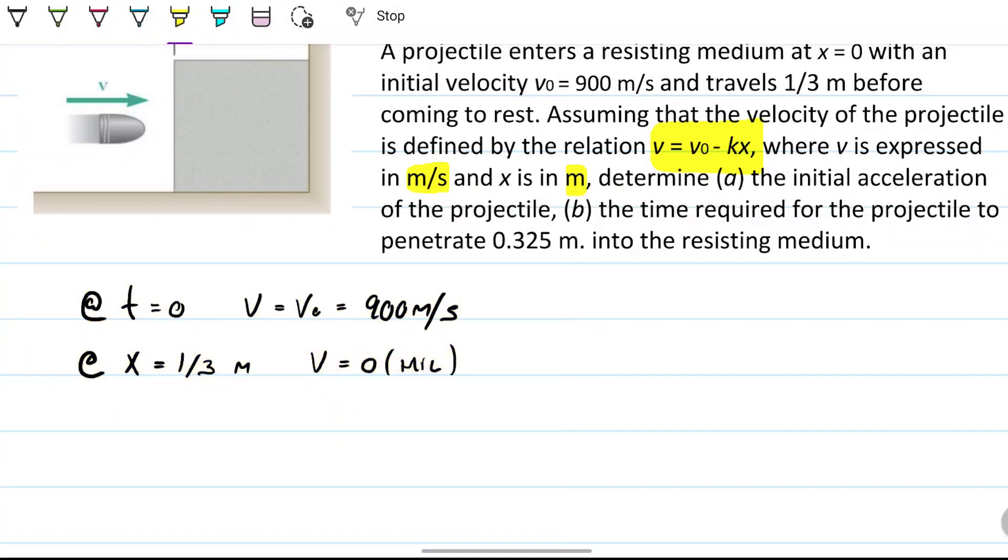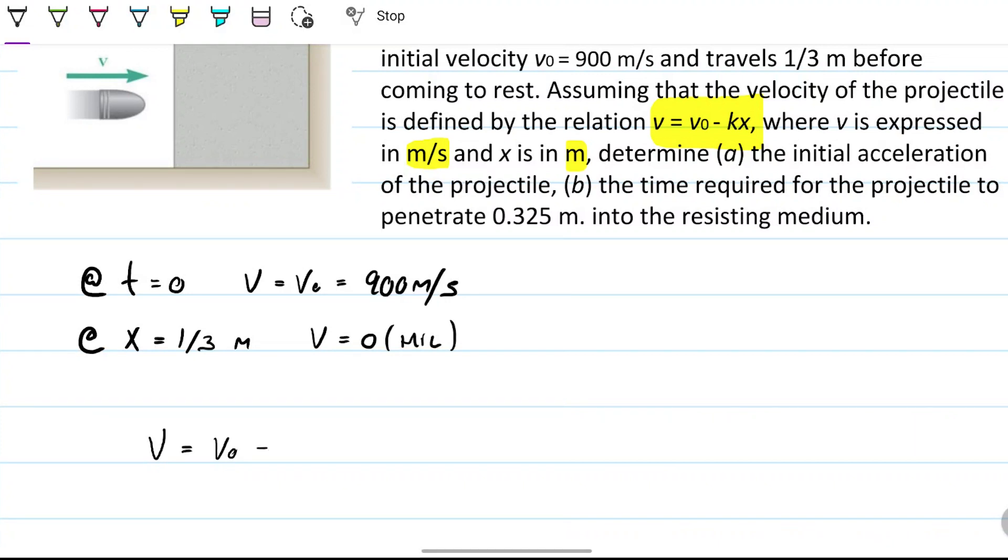We are going to take advantage of that. We also know the relationship between the velocity and the position, so we're given that this is v₀ minus kx. We don't know k, we need to find out k. And we're looking for the initial acceleration. So the question is, at time equals zero what is the acceleration? And the other question is, at x equals 0.325 meters, what is the time?